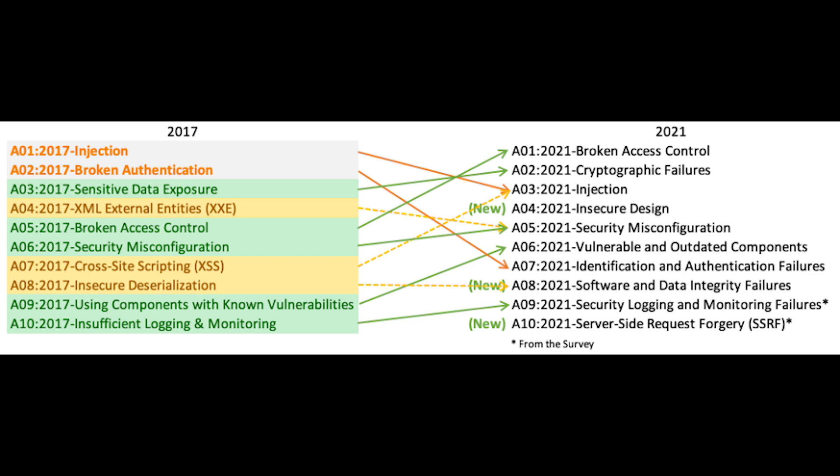Next, we have server-side request forgery. Server-side request forgery flaws occur whenever a web application is fetching a remote resource without validating the user-supplied URL. It allows an attacker to coerce the application to send crafted requests to an unexpected destination, even when protected by a firewall, VPN, or another type of network access control list. Developers can prevent this by implementing controls on network and applications, like enforcing deny on firewall on the network layer, and sanitizing and validating client-supplied input data on the application layer, or disabling HTTP redirections.